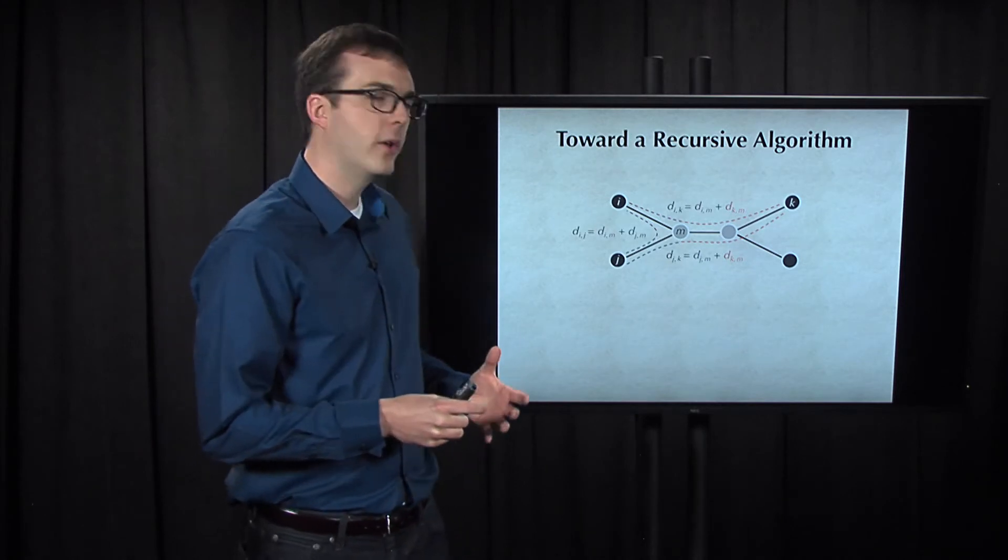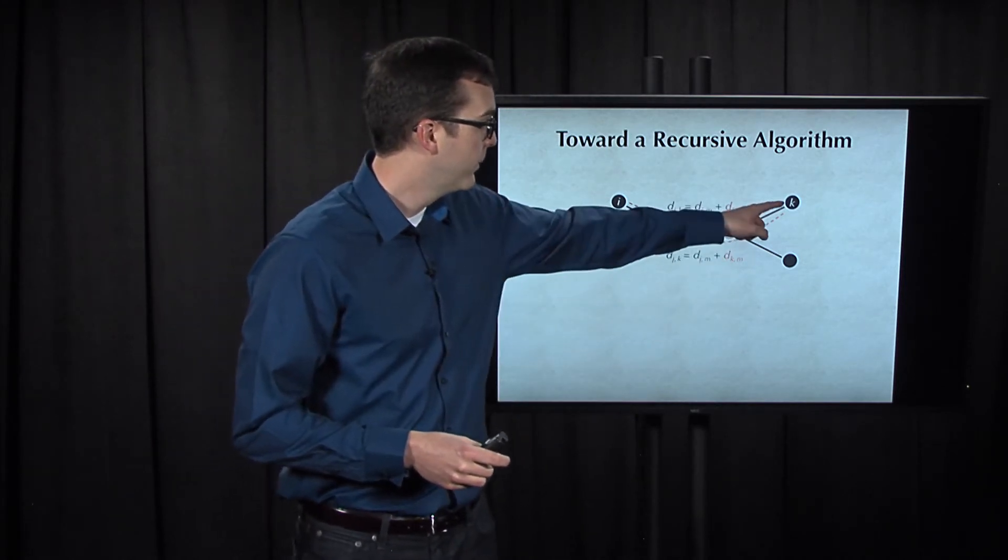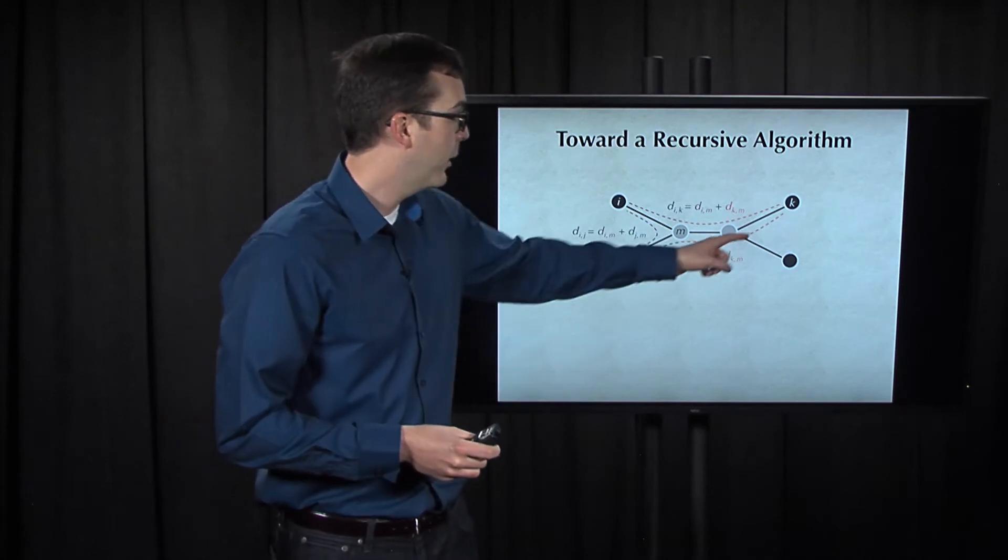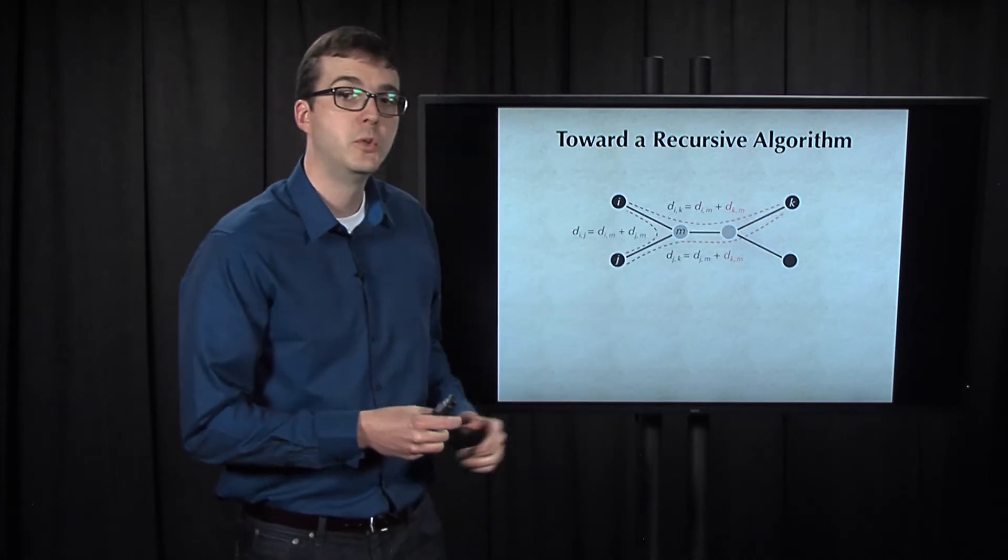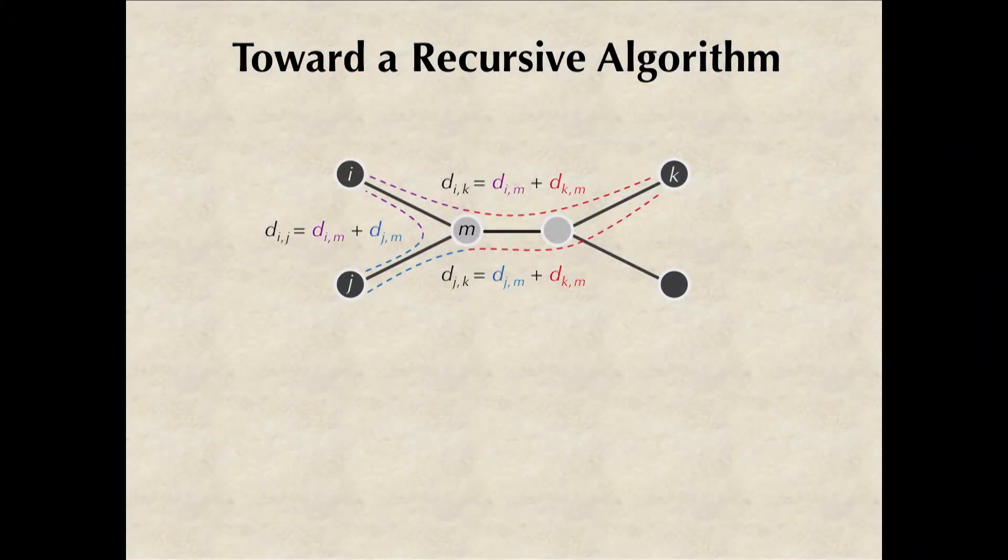So I want you to notice that red plus purple is the distance from i to k, red plus blue is the distance from j to k, and blue plus purple is the distance from i to j.